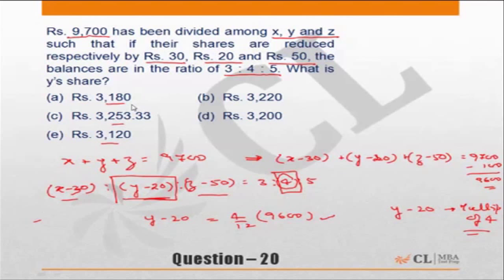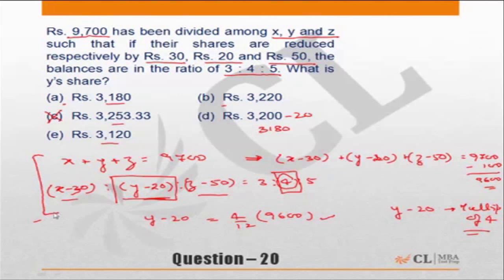3180 minus 20 is 3160, which is a multiple of 4 — hold on to that choice. Similarly, hold on to choice 2. Choice 3, which is 3253.33, minus 20 will not be a multiple of 4, hence it is incorrect. Choice D is 3200; subtract 20 and you get 3180, which is a multiple of 4. Choice E is also a multiple of 4. So in this question, multiple choices survive and we still need to go back and solve it the standard way. Whichever choice is not a multiple of 4 should be eliminated first.